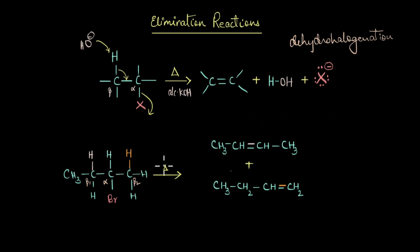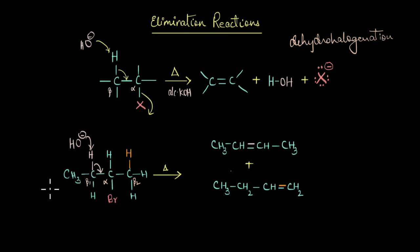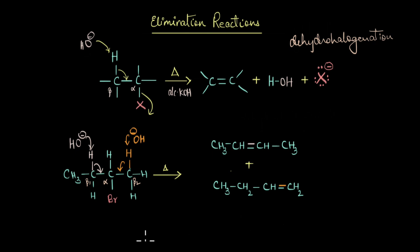When we heat this haloalkane in alcoholic KOH solution, the OH⁻ can abstract a hydrogen atom from one beta carbon, in which case you will get a particular alkene because the double bond would be formed between the alpha carbon and that beta carbon. On the other hand, if our OH⁻ abstracts the other beta hydrogen, the double bond would be formed there, and we get a different alkene.